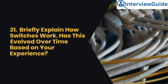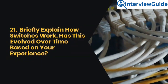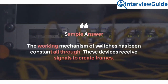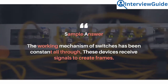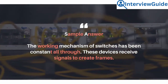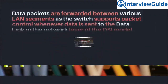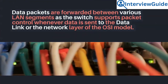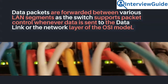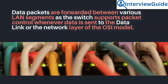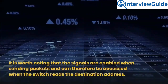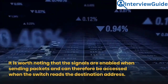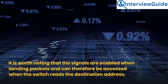Question 21: Briefly explain how switches work. Has this evolved over time based on your experience? The working mechanism of switches has been constant throughout. These devices receive signals to create frames. Data packets are forwarded between various LAN segments as the switch supports packet control whenever data is sent to the data link or the network layer of the OSI model. The signals are enabled when sending packets and can be accessed when the switch reads the destination address.